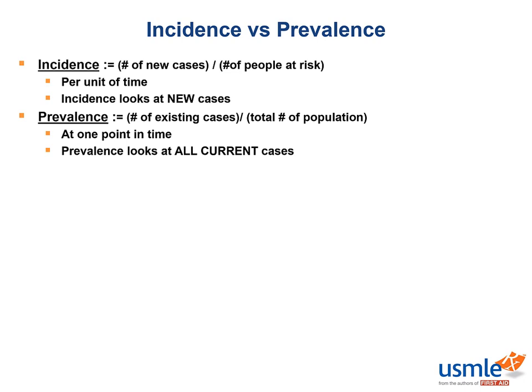Prevalence is the total cases in the population at a given time, divided by the total population at risk at the same time. The population at risk includes only people who could be afflicted by the disease. For example, if you were trying to quantify the prevalence of endometriosis in a community, only women would be included in the population at risk, since men are not at risk for uterine diseases.